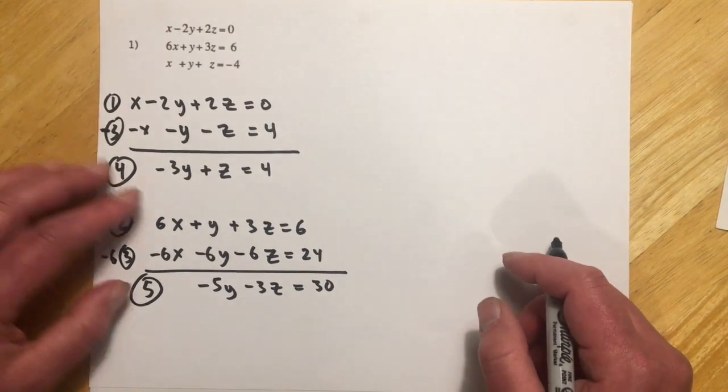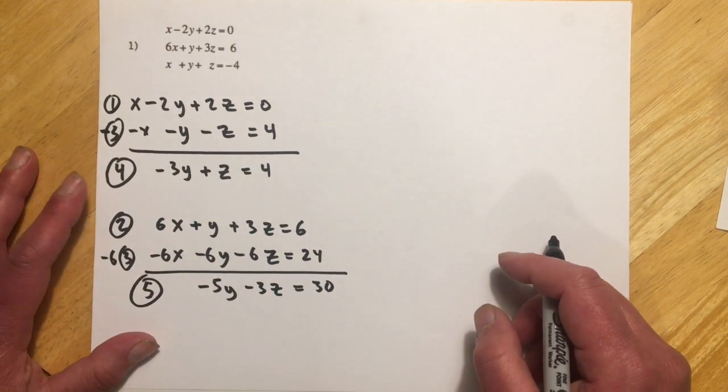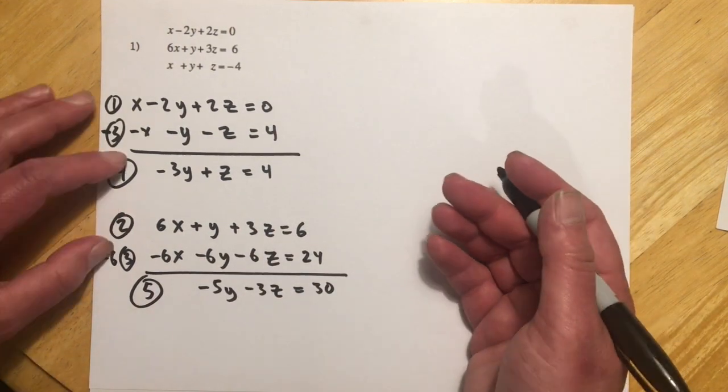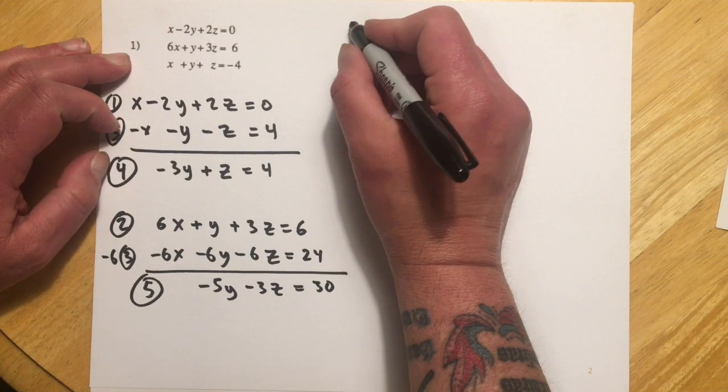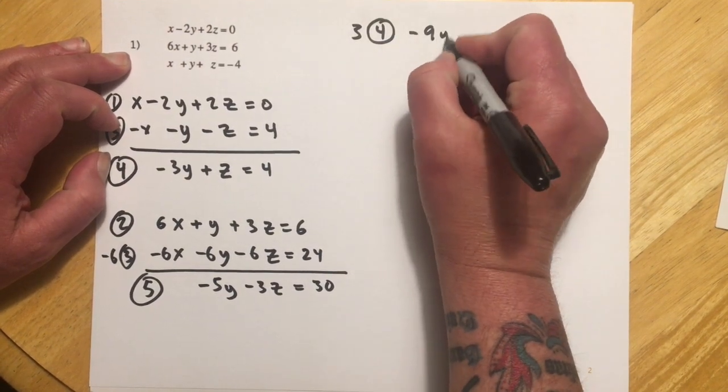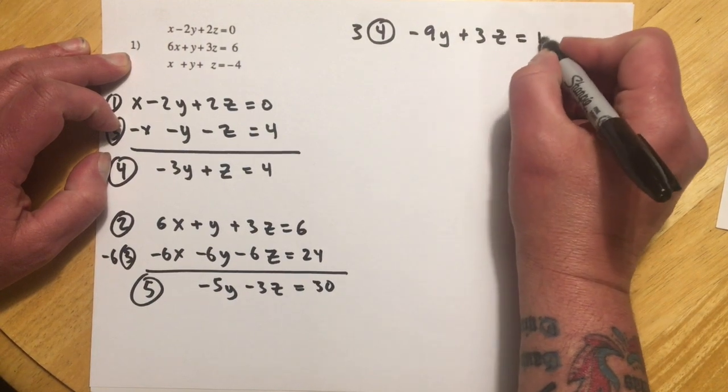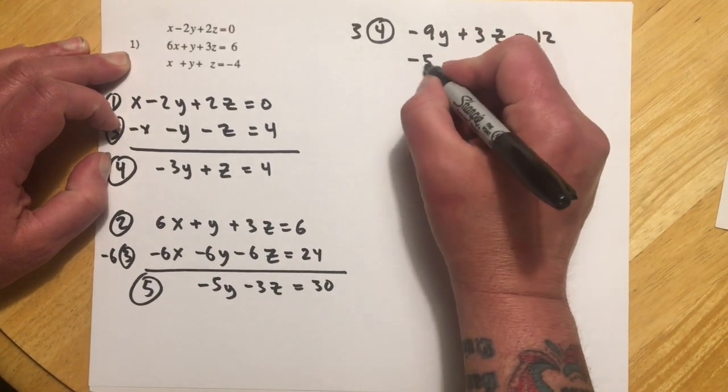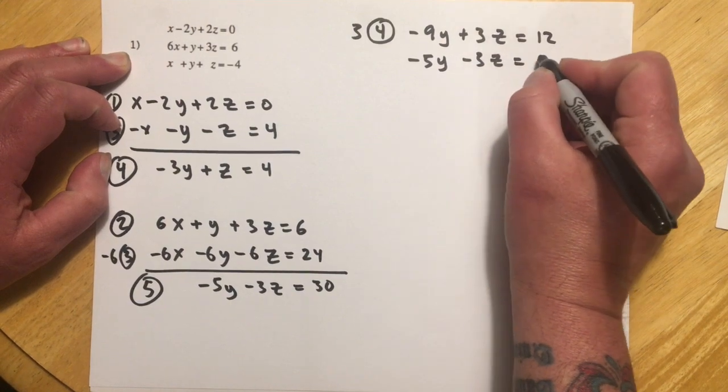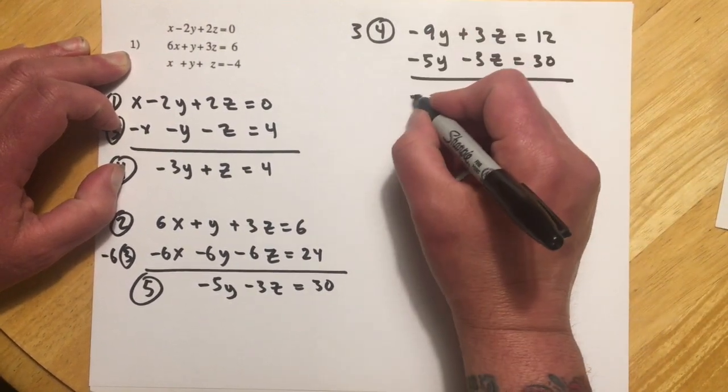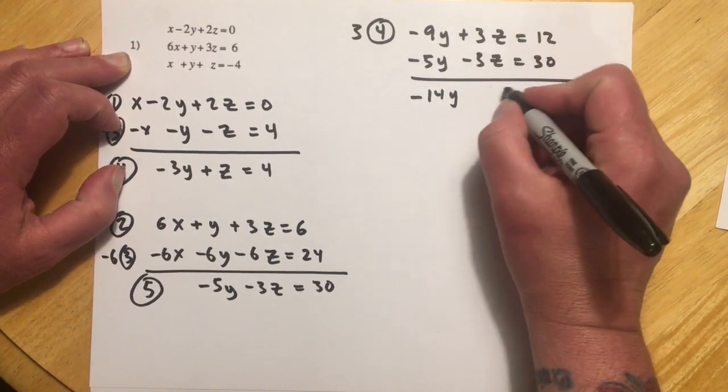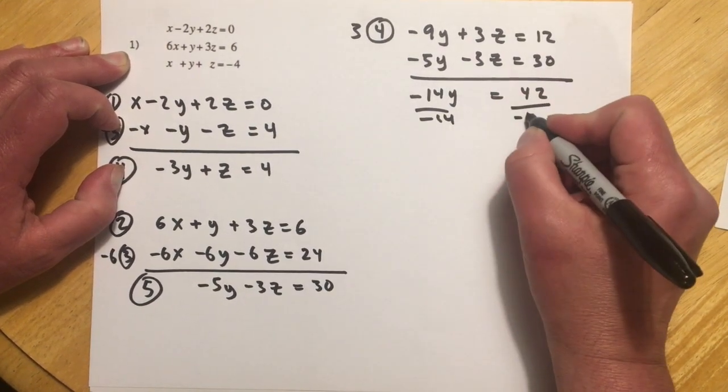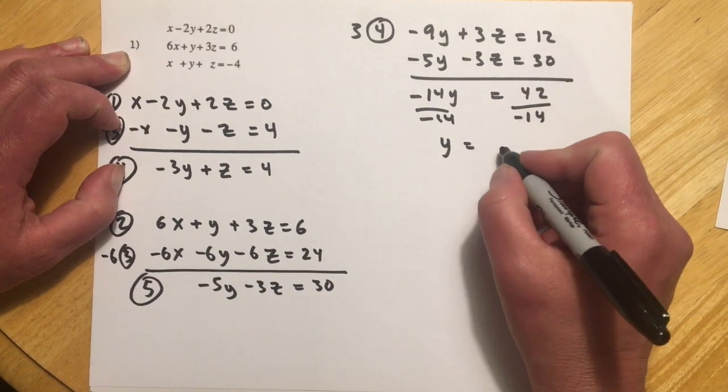So now that I have a four and a five, and they're both in y and z, and it doesn't matter which two variables, as long as they're the same ones, now I can eliminate one of these, and then that's going to let me get my first answer. So I'm going to multiply equation four by three. And you can see why I'm doing that is that that's going to knock out this z in equation five. So negative 5y. And so here I get negative 14y. And here I get the z's drop out. So I get 42, and then dividing both sides by negative 14, I get y equals negative 3.